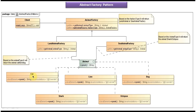Cat will implement the speak method and it will return 'meow meow'. Lion will implement this speak method and it will return 'roar'. Dog will implement this speak method and it will return 'bark bark'. Shark class will implement this speak method and it will return 'cannot speak'. And Octopus class will implement this speak method and it will return 'squawk'.